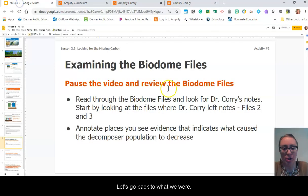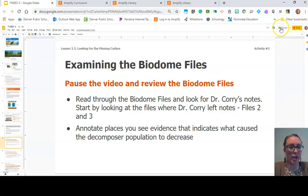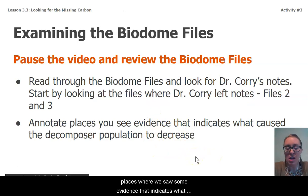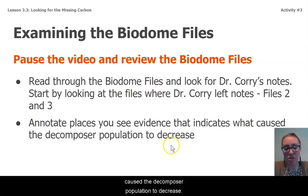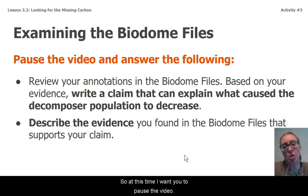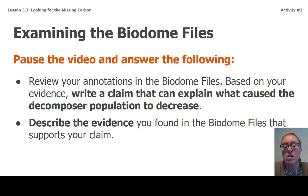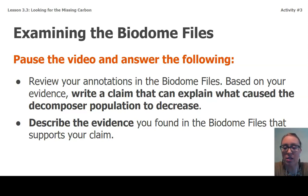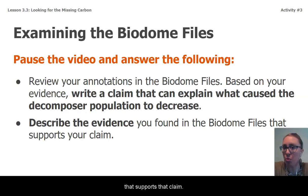So let's go back to what we were considering. We were reading through those files and annotating for places where we saw evidence indicating what caused the decomposer population to decrease. At this time, pause the video and on your paper answer these two questions: review your annotations and write a claim that explains what caused the decomposer population to decrease, then describe the evidence you found in the biodome files that supports that claim.